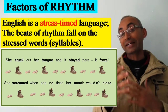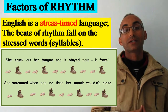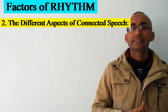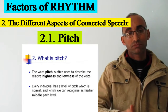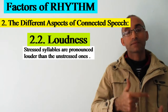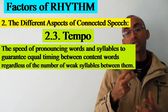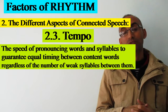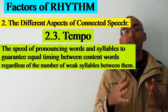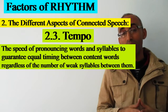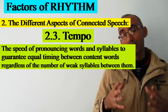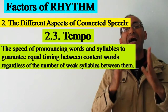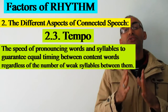Other factors which also contribute to the creation of rhythm in the English language include the various features of connected speech. For example, we have pitch — high or low — loudness, and tempo, which means the speed of pronouncing words and syllables in speech and sentences. For grammar words, sometimes we pronounce them quickly to guarantee equal timing between the content words, regardless of the number of syllables in those grammar words.